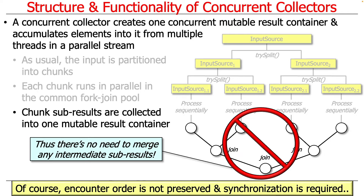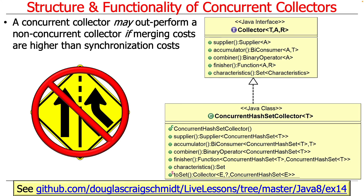The downside is that encounter order is not preserved, and you need to make sure whatever you're using as your one and only mutable result container is thread-safe. A concurrent collector may outperform a non-concurrent collector when the merging costs are higher than the synchronization costs. That depends on factors like how many threads you have, your memory hierarchy, and how long it takes to synchronize things across multiple cores. There is no one-size-fits-all answer, but we'll look at an example to make it clear.